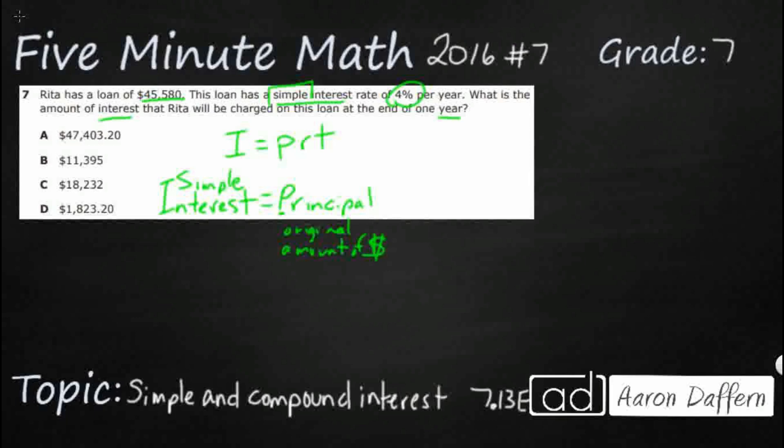And then what we do is we multiply this by the R, which is the interest rate. Okay, so that's always going to be a percentage. And then we multiply that by T, which is time. So that's what those three letters stand for. And typically, this is the amount of years.